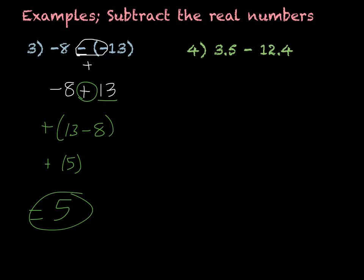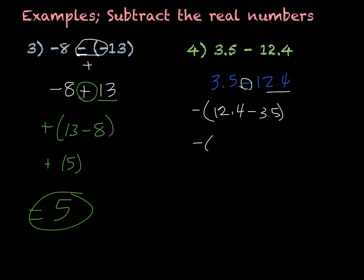The next problem, we have 3.5 minus 12.4. Once again, my bigger number is negative, so my answer is going to be negative. I just take the big number minus the small number: 12.4 minus 3.5 gives me 8.9. So I have negative 8.9, and that would be my final answer.